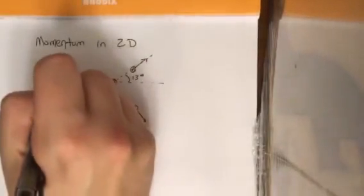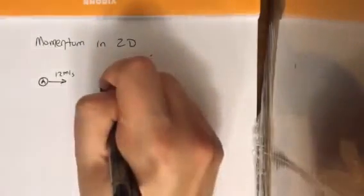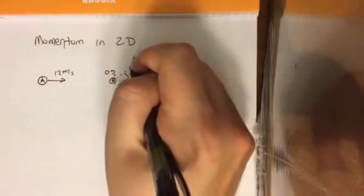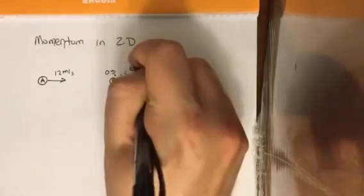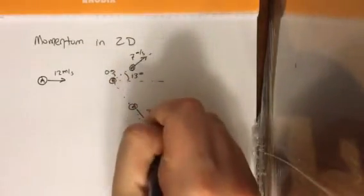All right, and then let's put some numbers to this. So let's say that ball A is going, let's say 12 meters per second here. Let's say that ball B starts at zero meters per second and eventually gets going to a speed of, let's say, seven meters per second. And the question is, how fast is ball A going? And what angle is ball A traveling at?